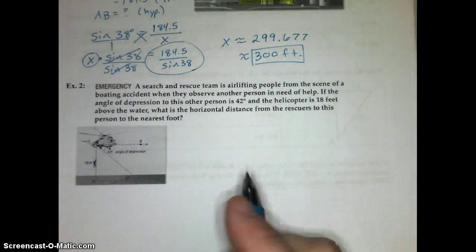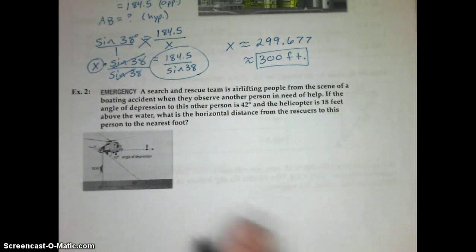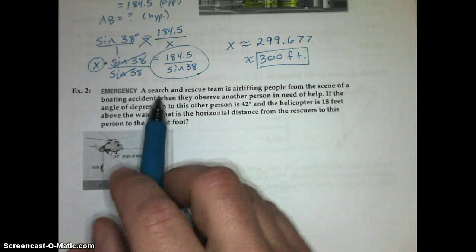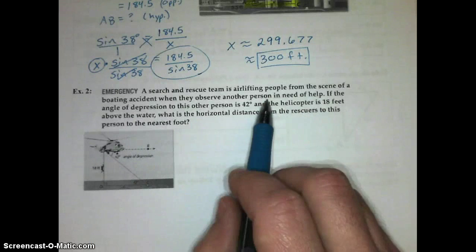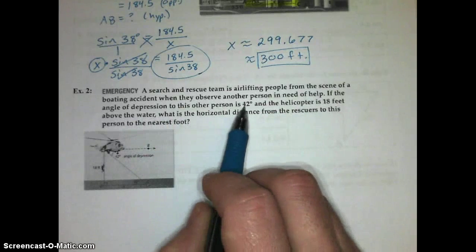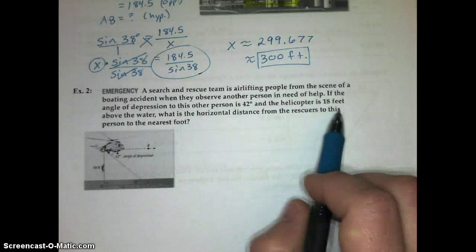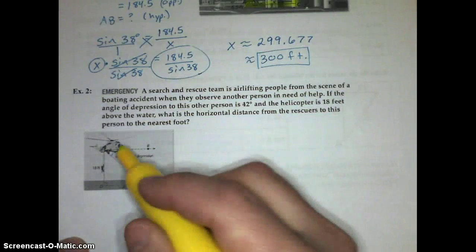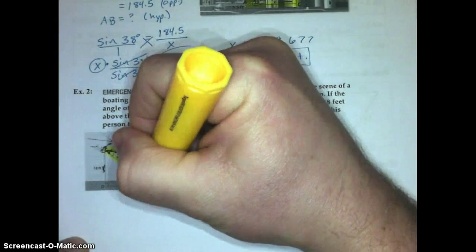Now, we have a similar problem we could set up with an angle of depression. Here's our situation. A search and rescue team is airlifting people from the scene of a boating accident when they observe another person in need of help. If the angle of depression to the other person is 42 degrees and the helicopter is 18 feet above the water, what is the horizontal distance from the rescuers to the person to the nearest foot?